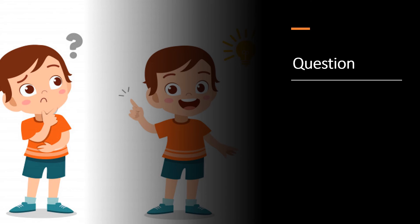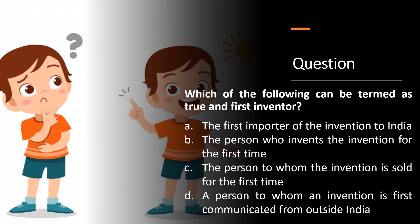Now it's time for the question. Which of the following can be termed as the true and first inventor? Option A: the first importer of the invention to India; Option B: the person who invents the invention for the first time; Option C: the person to whom the invention is sold for the first time; Option D: a person to whom an invention is first communicated from outside India. You can put your answers in the comment section below.